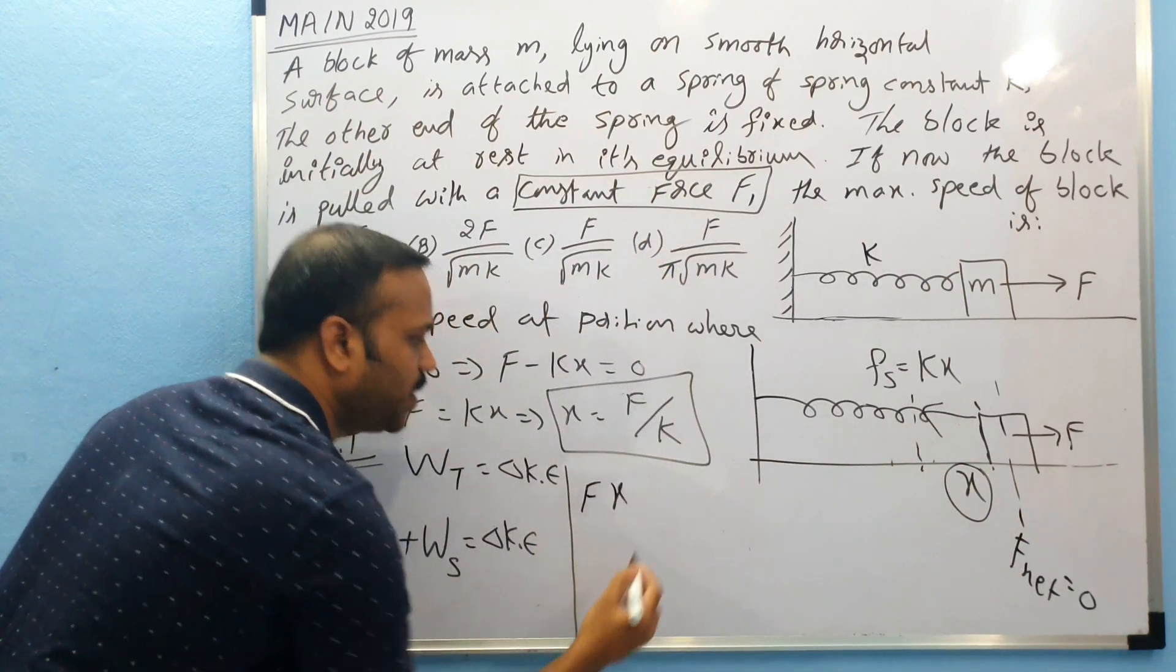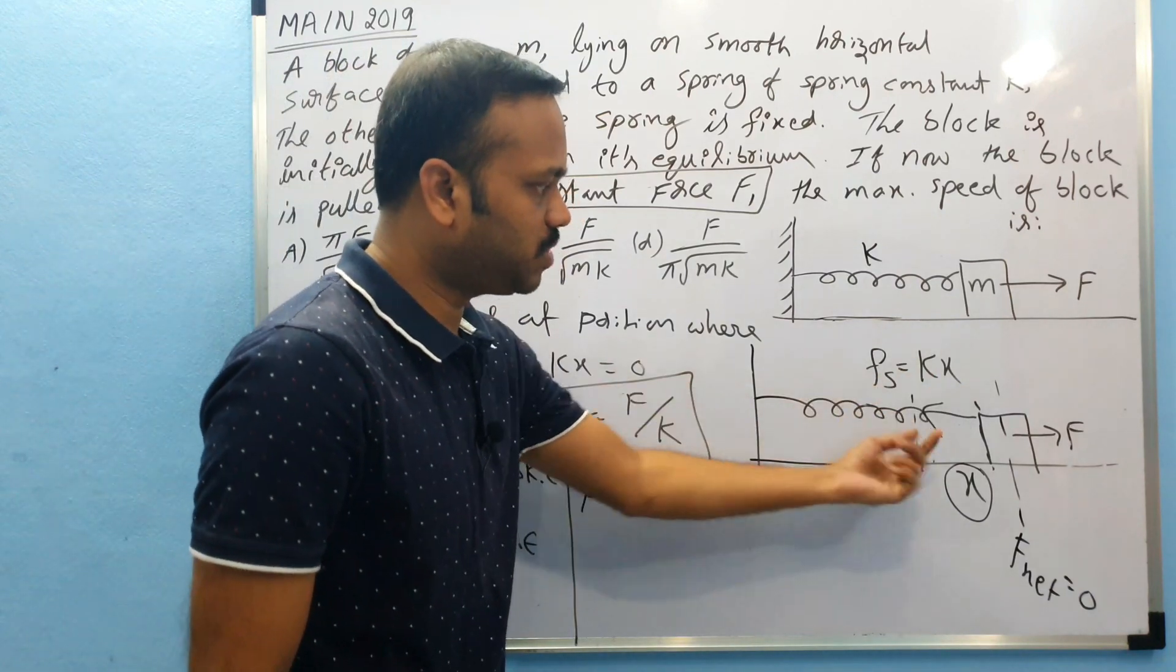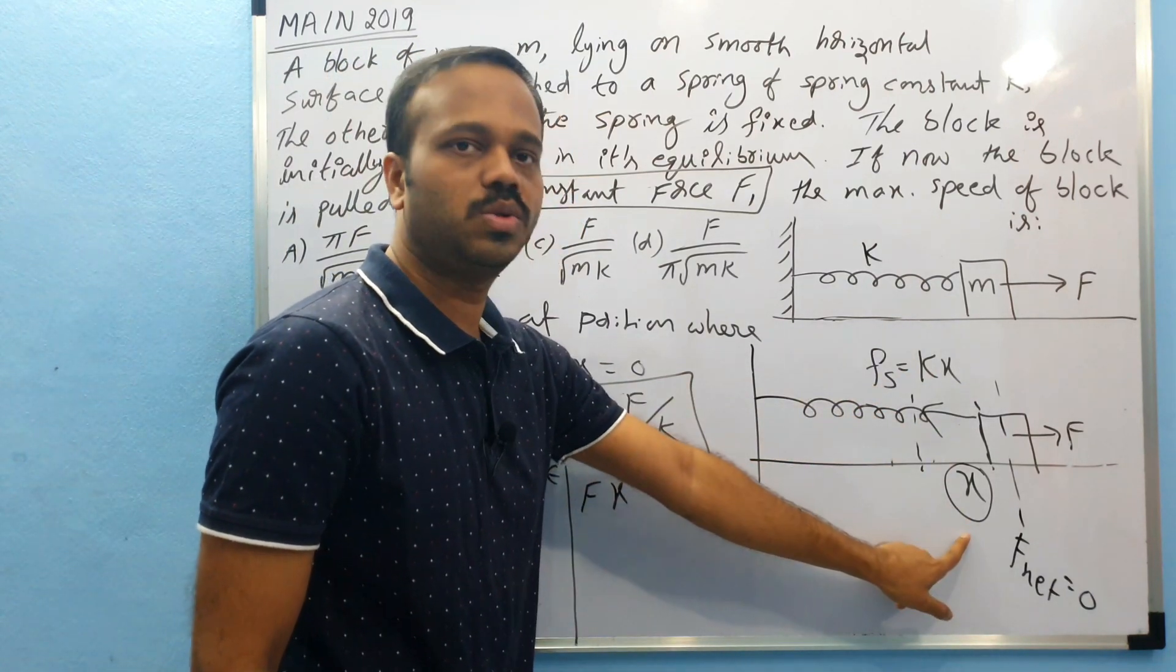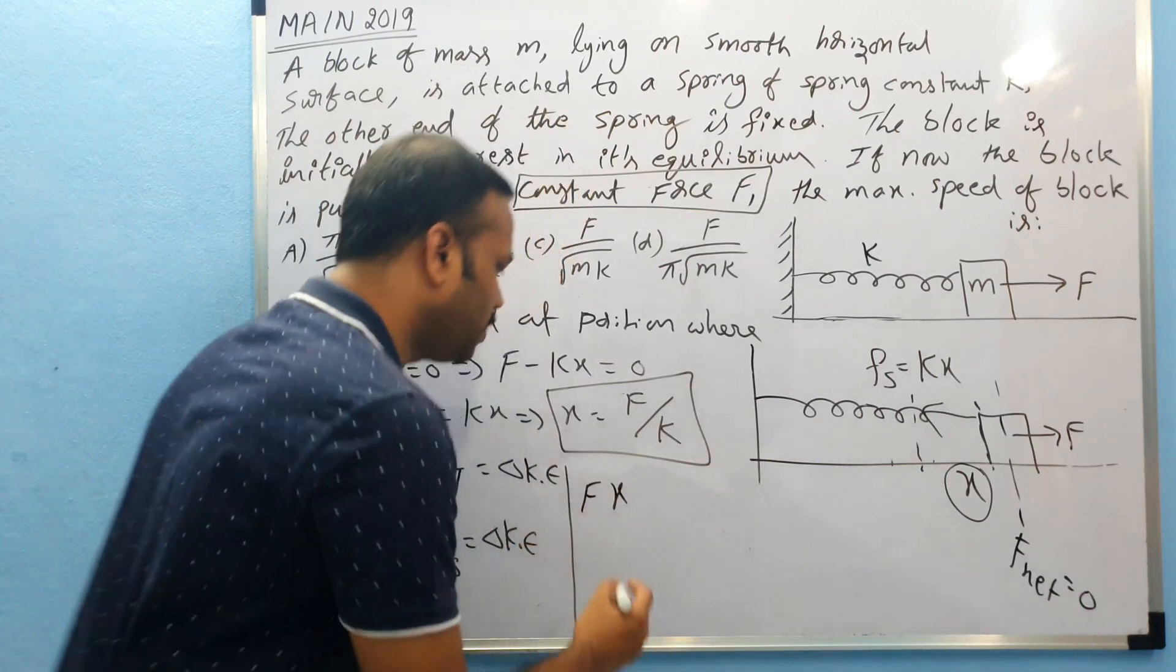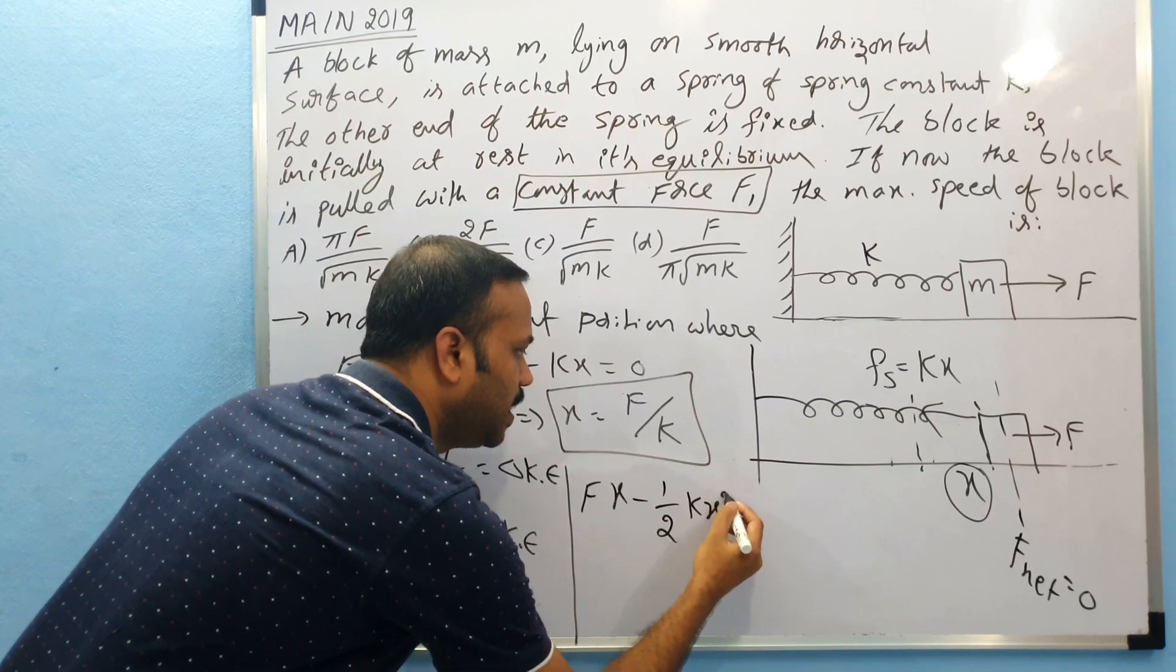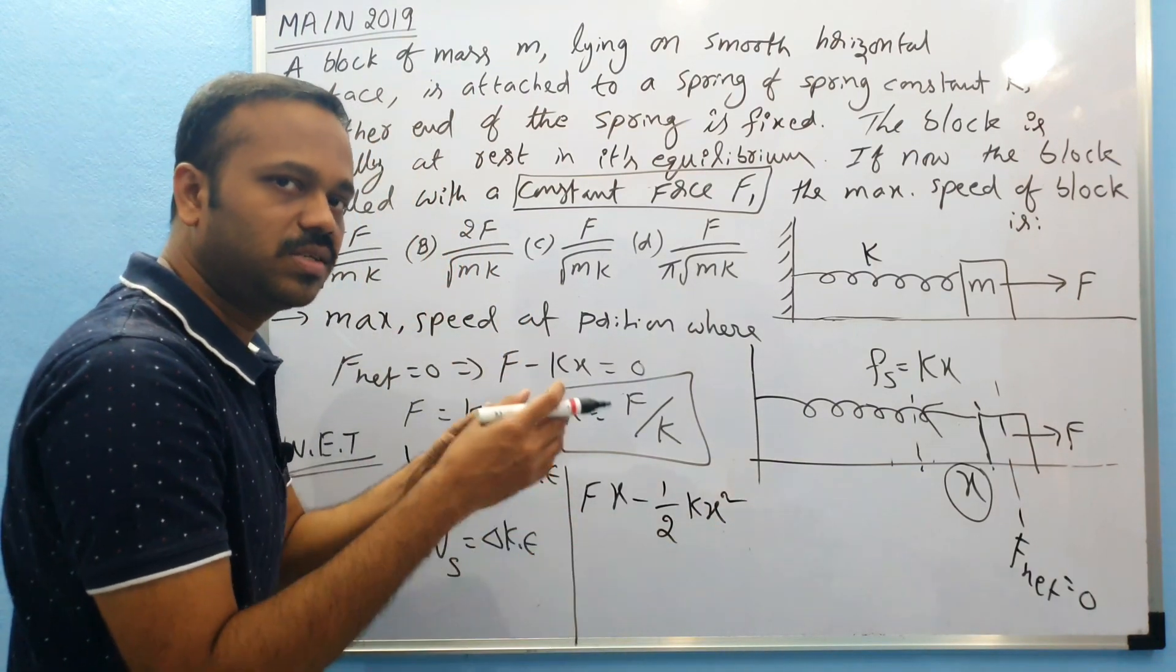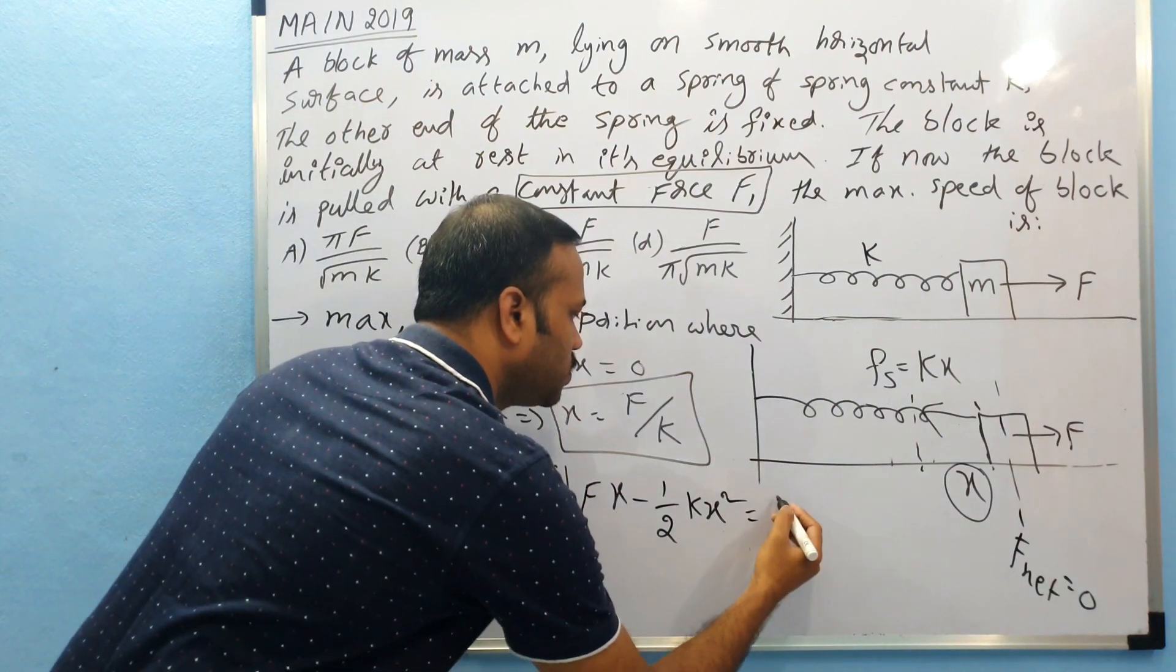And if you see, the spring force is acting in the opposite direction to the displacement, so work will be negative by the spring. And what is the work done by the spring? Half kx squared. Right, this is the work done or the potential energy stored in the spring, and that is equal to change in kinetic energy.